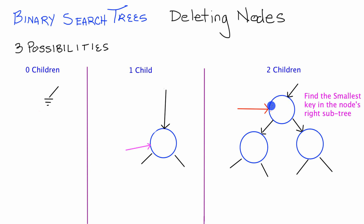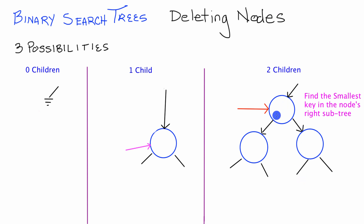So what we're going to do is not actually delete this node directly. Instead, we're going to find the smallest key in this node's right subtree. Once we find the node containing that smallest key, we're going to take the information from that node and overwrite the information in the node we want to delete. That key is then greater than all keys in the left subtree and less than all keys in the right subtree.